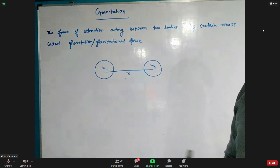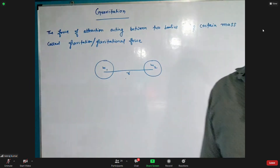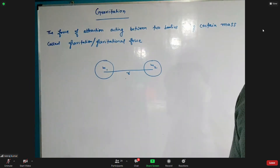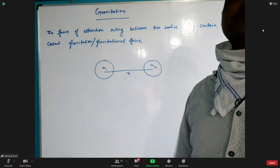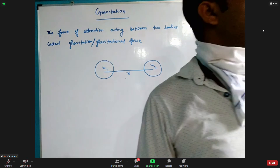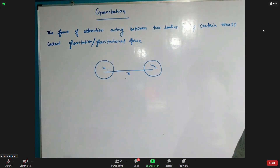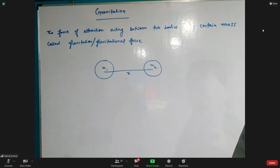If there are two bodies with some mass, and if there is a separation between these two bodies, they can attract one another. This attractive nature — one attracting the other — is what we call Gravitational Force.